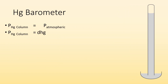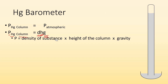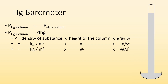The pressure of the mercury column equals the atmospheric pressure of the gas pushing down on it. The math for it: the pressure of the mercury column is equal to the density times the height of the column times the acceleration due to gravity — P = ρgh. The density is in kilograms per cubic meter, height in meters, and gravity in meters per second squared. When you work out the units, you end up with kilograms over meter·second squared, which is the same as one pascal.